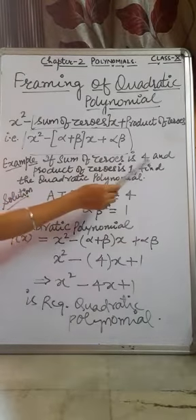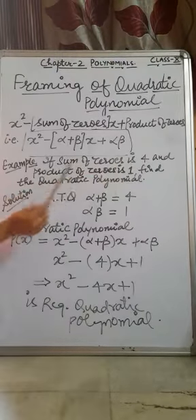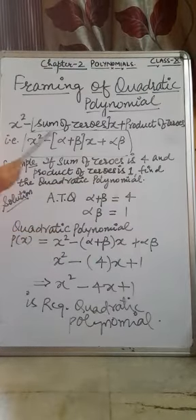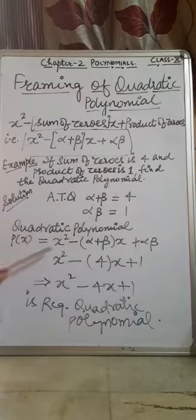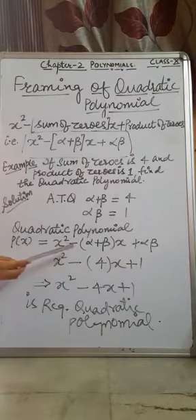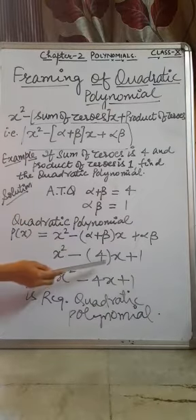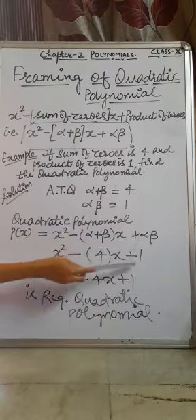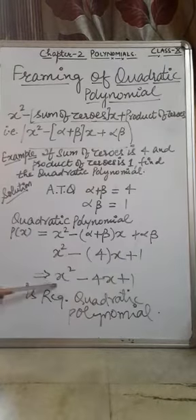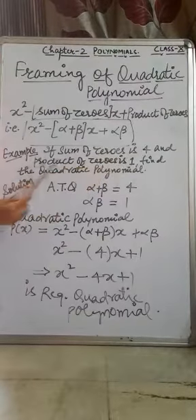Example: if the sum of the zeros is 4 and the product of zeros is 1, find the quadratic polynomial. According to the question, alpha plus beta equals 4 and alpha into beta equals 1. Using the formula, the quadratic polynomial is x squared minus (alpha plus beta)x plus alpha into beta, substituting: x squared minus 4x plus 1. Hence, x squared minus 4x plus 1 is the required quadratic polynomial, whose sum of zeros is 4 and product of zeros is 1.